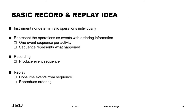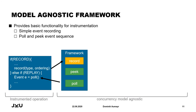As each concurrency model is different, there is no single recording strategy that fits them all perfectly. By instrumenting each non-deterministic operation individually, we can choose for each operation how to capture and reproduce the non-determinism. We support this with our model-agnostic framework, where these operations are represented as events with ordering information. For each activity, a sequence of events is produced in the recording step representing what happened in the original execution. In a replay execution, the instrumented operation that produced an event is supposed to consume that event again and use the ordering information to reproduce the ordering. Our framework ensures that in a replay execution each activity gets the same events that it recorded.